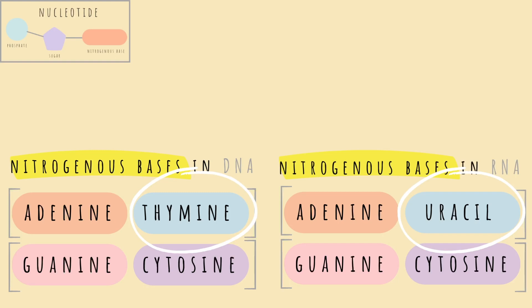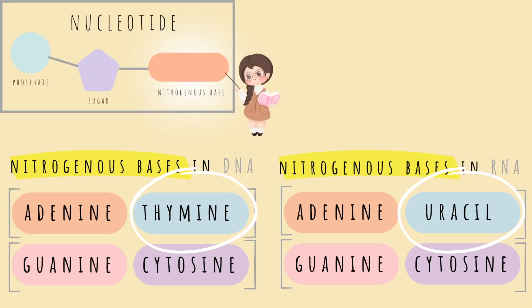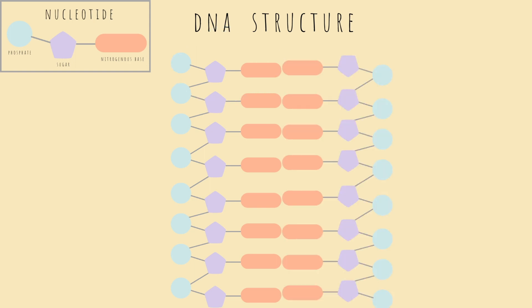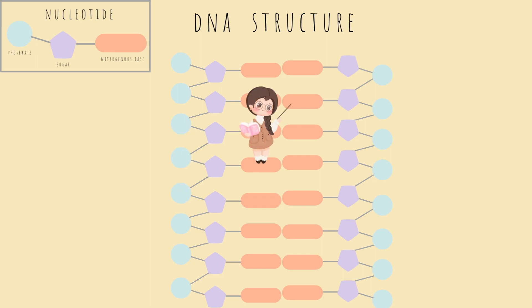Remember, these nitrogenous bases fit in the nucleotide structure. Let's take a look at the structure of a DNA molecule. Here we see the nucleotide that is the monomer of DNA and RNA, meaning it makes up the structure of DNA and RNA. DNA has a double strand that we refer to as a double helix. Both strands run anti-parallel to each other, meaning they go in opposite directions. The outside of the strand is made of phosphates, the middle is made of the sugar, and the inside of the double helix is where you find the nitrogenous base pairs.